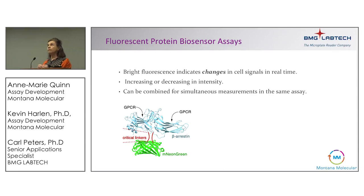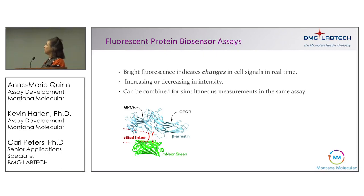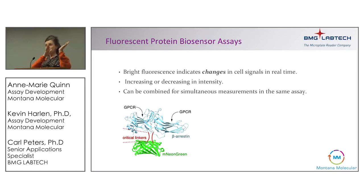If you're not familiar with fluorescent protein biosensor assays, they are really brightly fluorescent, allowing you to quantify changes in cells over time. Signals can be either increasing or decreasing in intensity — very different from a dye. Each assay is reversible, and they can be combined for simultaneous measurements. For the arrestin sensor specifically, fluorescent protein is inserted into the hinge region between the two lobes of arrestin, with linkers optimized to produce the highest signal-to-noise.